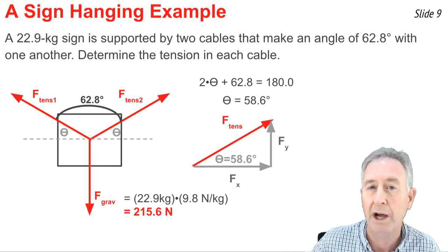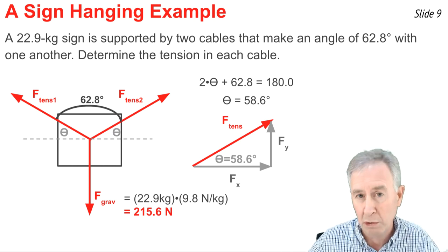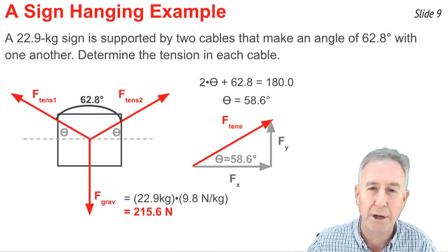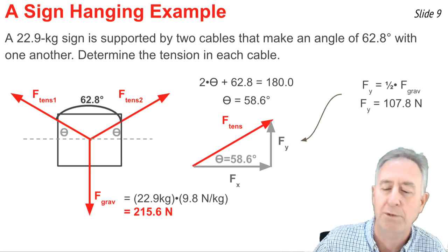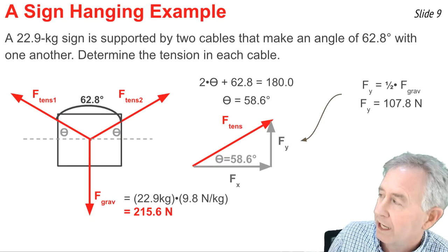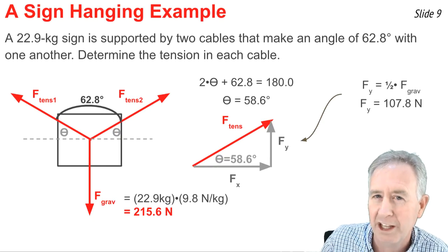So to calculate the y component, I can take the downforce of gravity and say it must be balanced by two of these ups, and each one must be half the strength of gravity. So I go one half times the 215.6, and I get the y component of the tension force, 107.8 newtons.